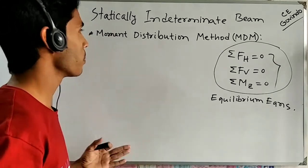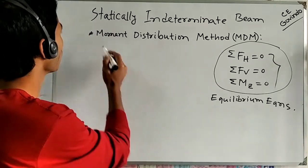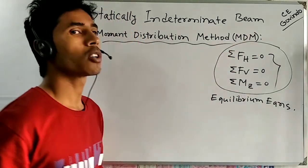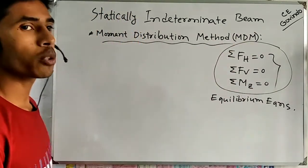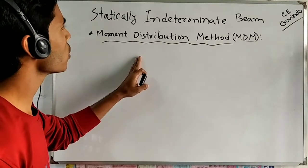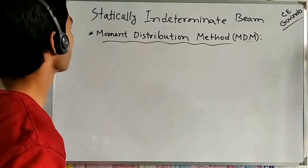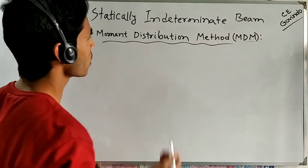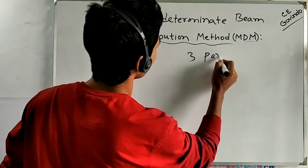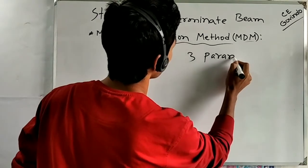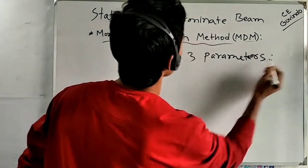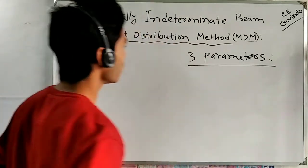To analyze statically indeterminate beams or structures we need to apply some method, and the Moment Distribution Method is one of them. Today we are going to deal with the Moment Distribution Method. To use this method we need to be introduced with some parameters — there are mainly three parameters we need to deal with.